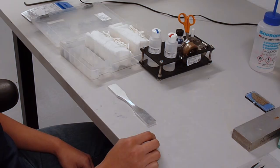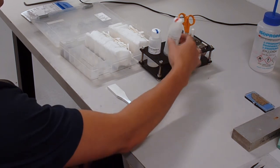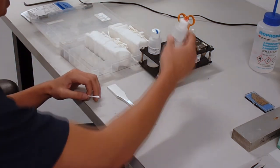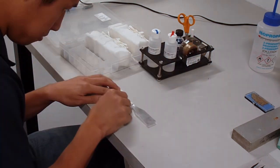The final task before the strain gauge can be applied is a secondary cleaning of the surface. Scrub the surface with the mild acid conditioner repeatedly using cotton swabs until one remains clean.